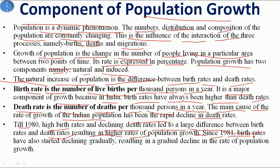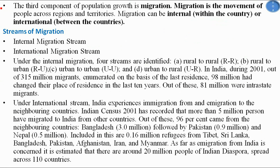Since 1981, birth rates have also started declining gradually, resulting in a gradual decline in the rate of population growth. One factor validating this is the rising literacy rate — couples now prefer around one or at most two children, reflecting changing reproductive attitudes.